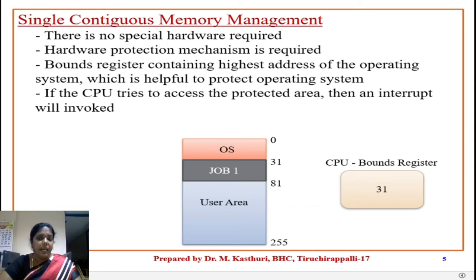The CPU contains a bounds register which is helpful for holding the highest address of the operating system, which helps to protect the operating system. Here, the highest address of the operating system is 31. If the CPU tries to access the protected area, then an interrupt will be invoked and control will transfer to the operating system.